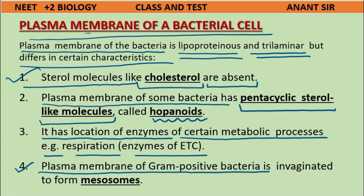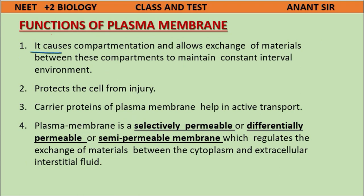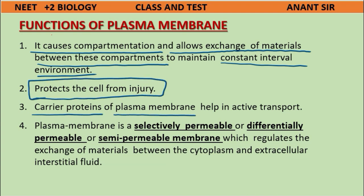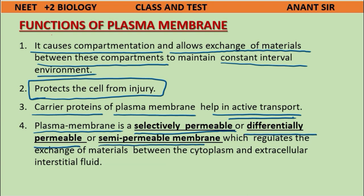The plasma membrane of gram-positive bacteria is invaginated to form mesosomes. This causes compartmentalization and allows exchange of materials between compartments to maintain a constant internal environment, protecting cells from injury. Carrier proteins of the plasma membrane help in active transport. The plasma membrane is selectively permeable — also called differentially permeable or semi-permeable — regulating exchange of materials between the cytoplasm and extracellular interstitial fluid.